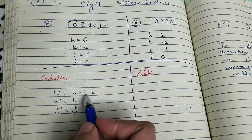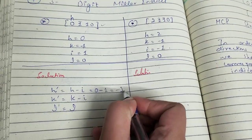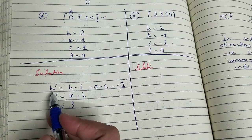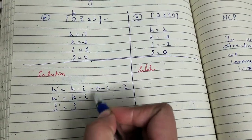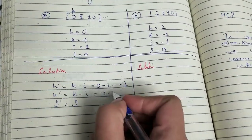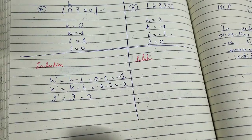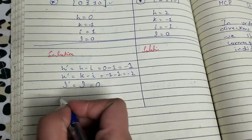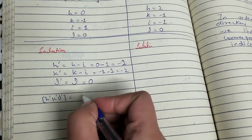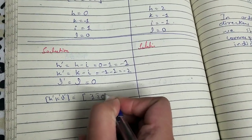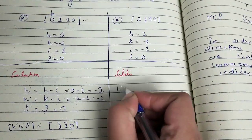For the first direction [0 1̄ 1 0]: h′ = h − i = 0 − 1 = −1; k′ = k − i = −1 − 1 = −2; and l′ = l = 0. So h′k′l′ enclosed in square brackets gives [1̄ 2̄ 0]. The three-digit Miller indices for direction [0 1̄ 1 0] are [1̄ 2̄ 0].